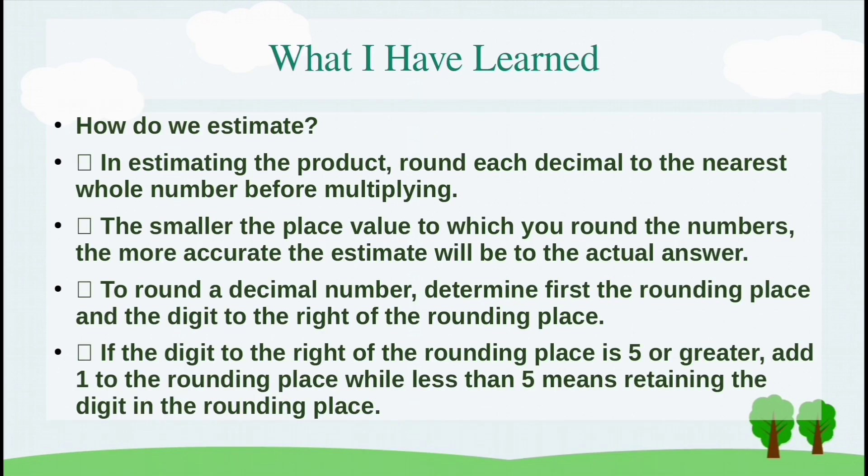What I have learned: How do we estimate? In estimating the product, round each decimal to the nearest whole number before multiplying. The smaller the place value to which you round the numbers, the more accurate the estimate will be to the actual answer. To round a decimal number, determine first the rounding place and the digit to the right of the rounding place. If the digit to the right of the rounding place is five or greater, add one to the rounding place, while less than 5 means retaining the digit in the rounding place.